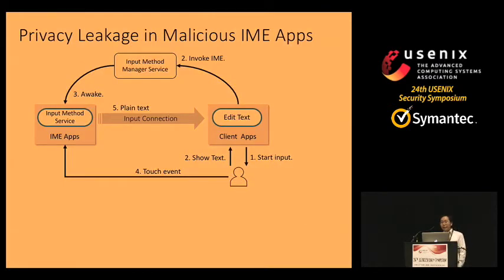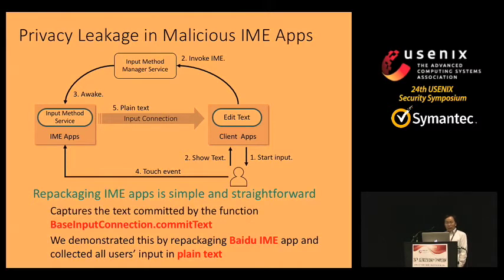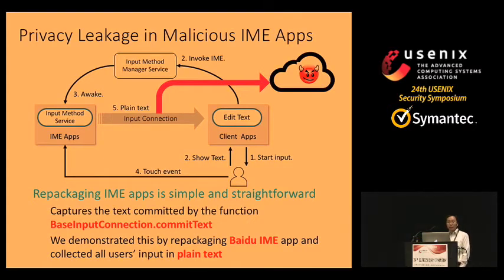We also confirmed that it is very easy to repackage an IME app as a keylogger. The Android IME architecture has an input method manager service responsible for invoking IME apps, and each IME app is connected with its client app — such as Twitter or Facebook — using an object called an input connection. The approach is simply to capture the text committed by the function via the input connection, and we demonstrated this by repackaging an IME app to collect all user input in plain text.